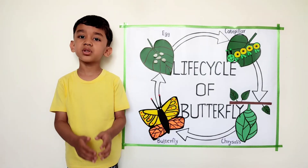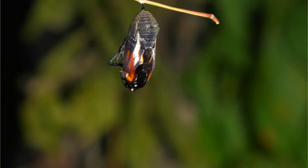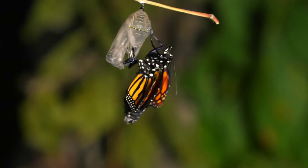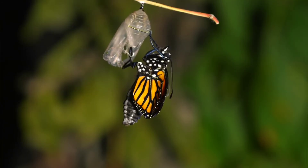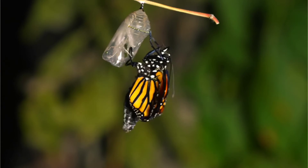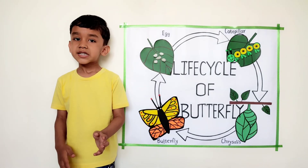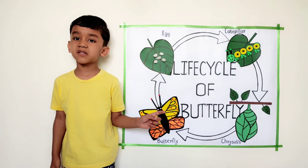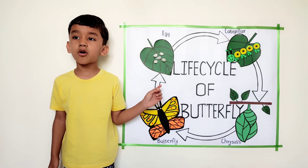After a few days, the pupa changes into a beautiful butterfly and comes out from the cocoon. This whole process of the Life Cycle of Butterfly is called metamorphosis.